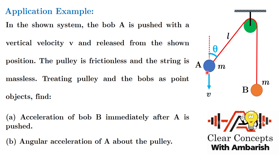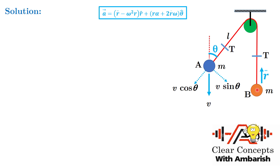The pulley is frictionless and the strings are massless. Treating the pulley and bobs as point objects, find: (a) the acceleration of bob B immediately after A is pushed, and (b) the angular acceleration of A about the pulley. Bob A will rotate about the pulley while its radius also changes, so we need the angular acceleration about the pulley as well.